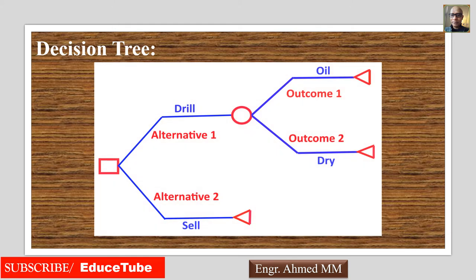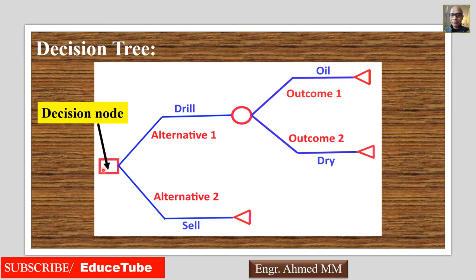This is a diagram of a decision tree. It has three nodes. The first one is the decision node. Two lines originate from this decision node, and these two lines represent decision alternatives. A decision maker must select only one alternative — this is most important.